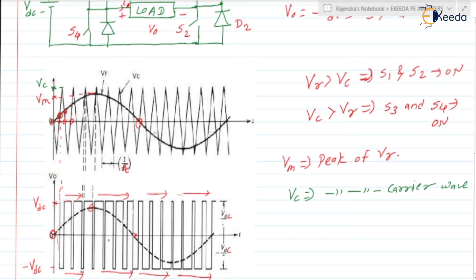That is why it is known as Bipolar Sinusoidal Pulse Width Modulation — corresponding to each half cycle, in the output we are getting pulses of both +VDC and −VDC magnitude. Important to note: the width of the pulse is not constant, it is changing.